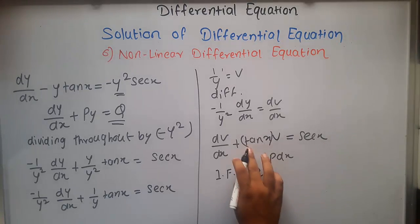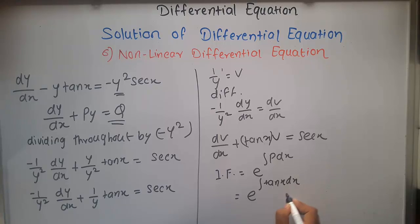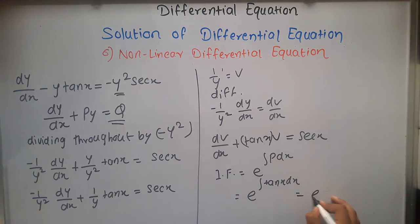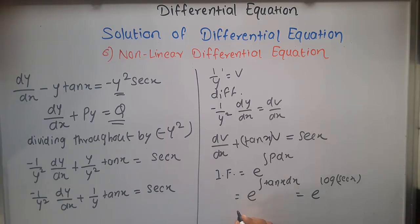Here P = tan x, so the integrating factor is e^(∫tan x dx). The integral of tan x is log(sec x), so e^(log(sec x)) = sec x. Therefore, the integrating factor is sec x.